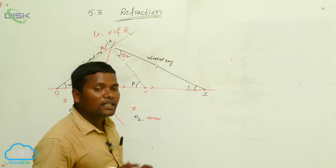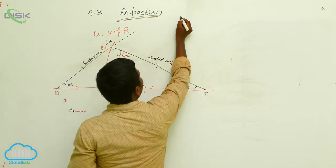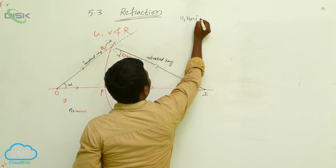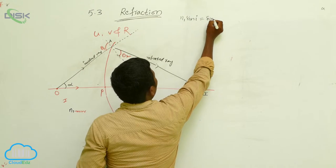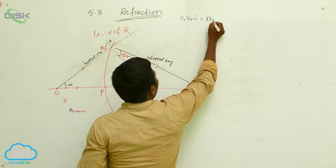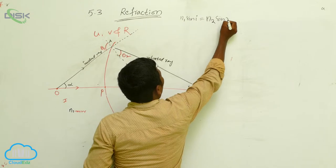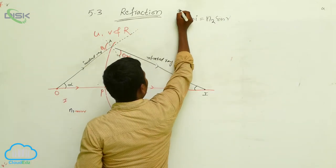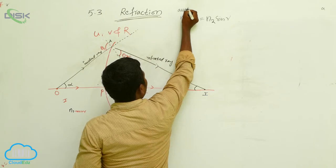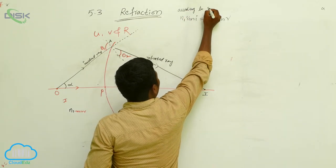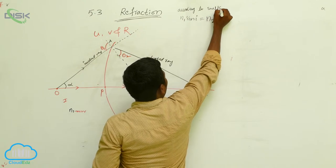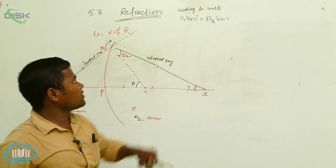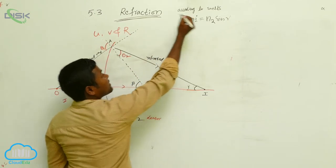Now if two mediums exist, we definitely have to apply Snell's law. Snell's law states: n1 sin i = n2 sin r. According to Snell's law, n1 sin i is equal to n2 sin r. What is the higher incident angle and what is the higher refracted angle?